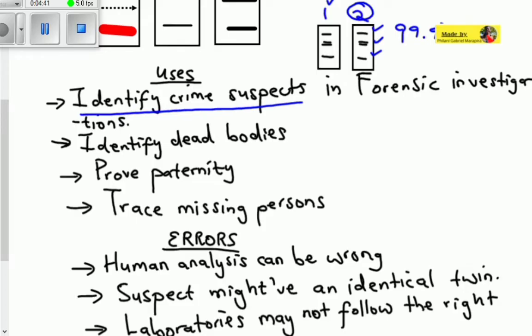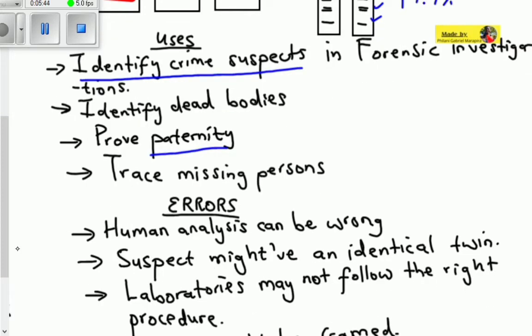The second use is to identify dead bodies. It's also used to prove paternity and to trace missing persons.